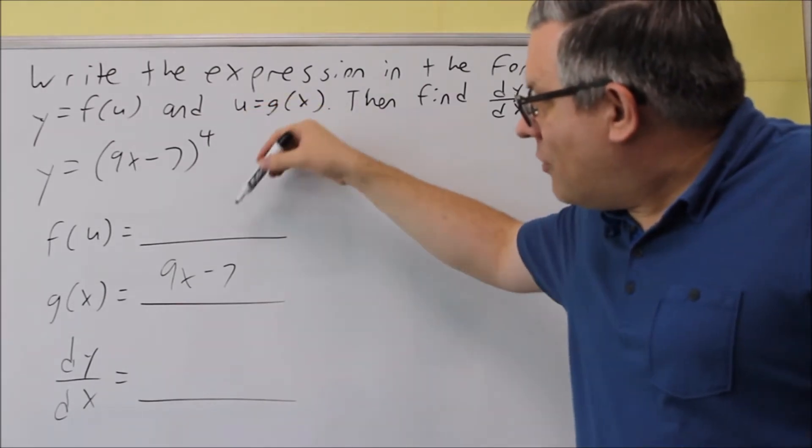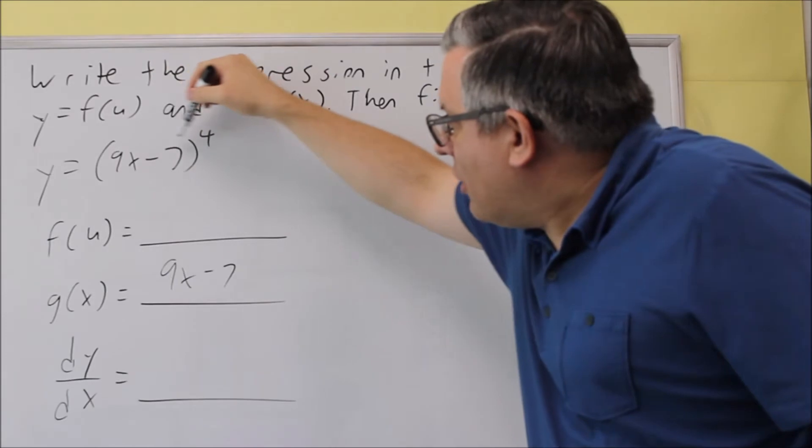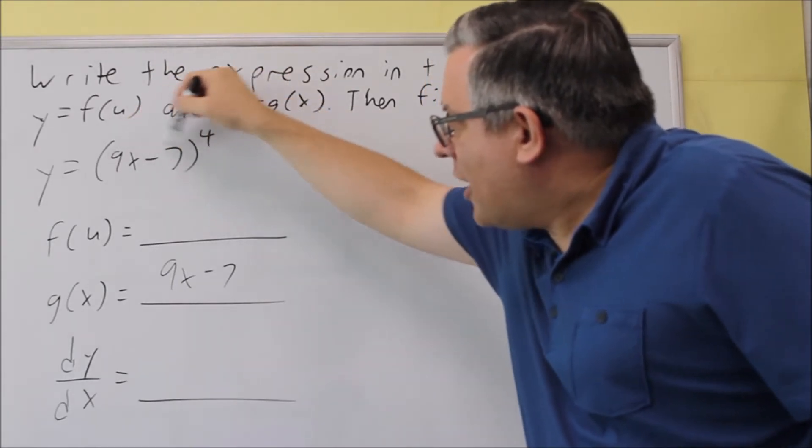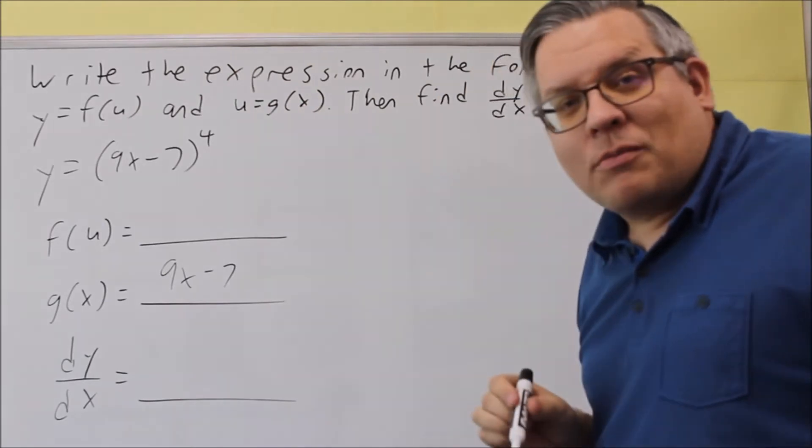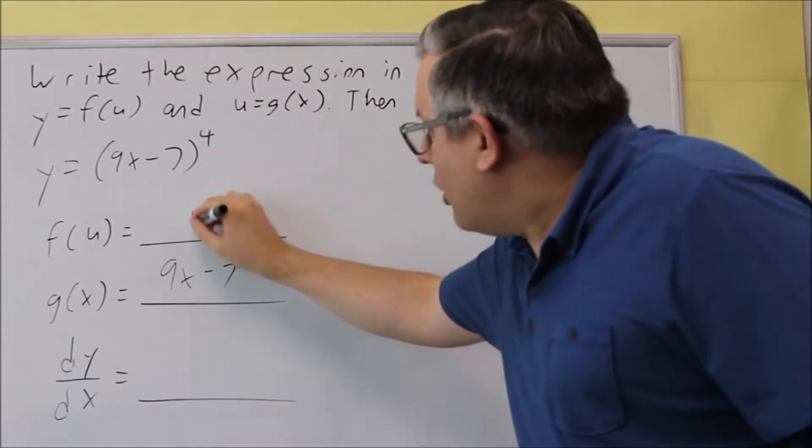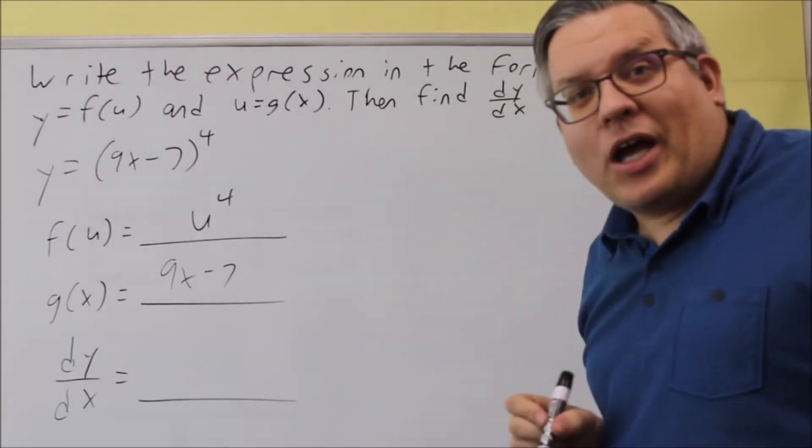So now, to find the f formula, you're going to remove the part from the inside and replace it with a u. So if I remove the 9x minus 7, replace it with a u, then I'm going to get u to the fourth power, and that's now going to be my f.